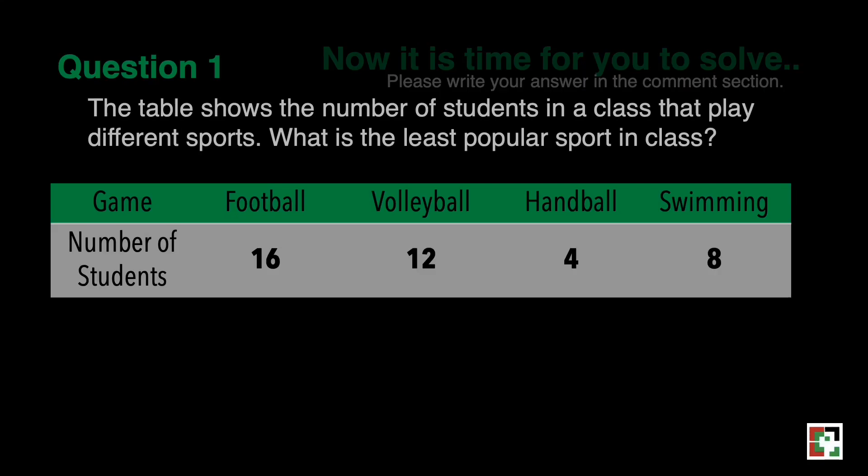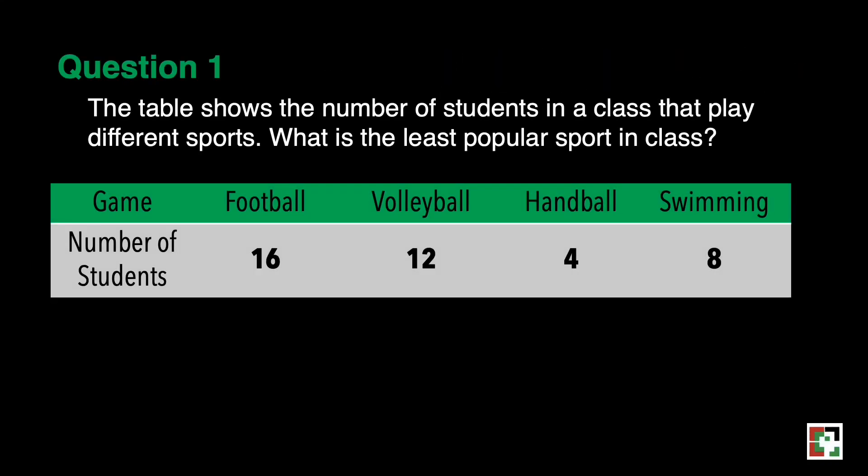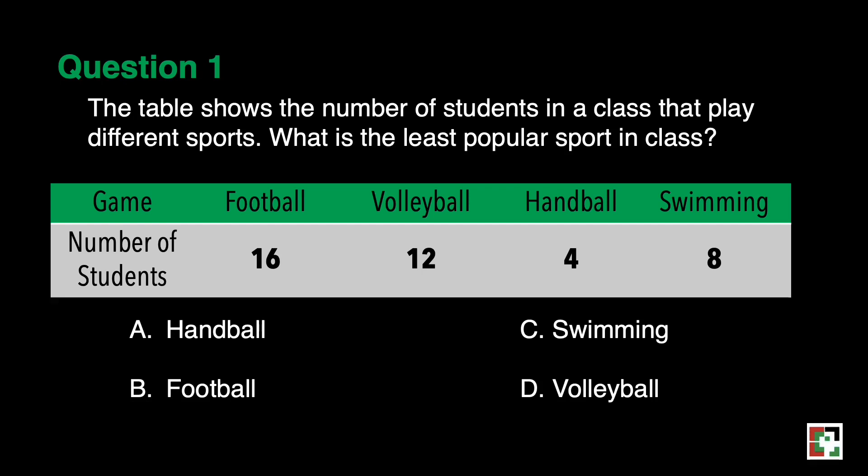Now, it is time for you to solve. Please write your answer in the comment section. Our first question: the table shows the number of students in a class that play different sports. What is the least popular sport in the class? A. Handball, B. Football, C. Swimming, D. Volleyball.